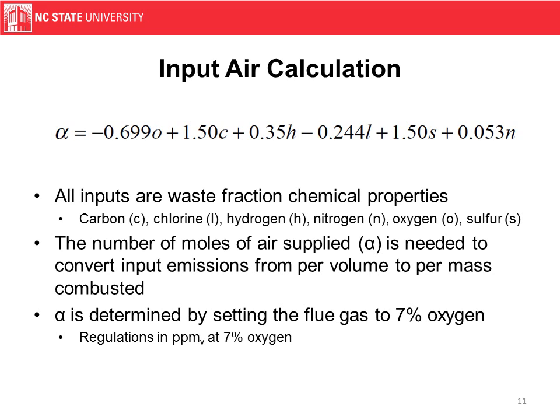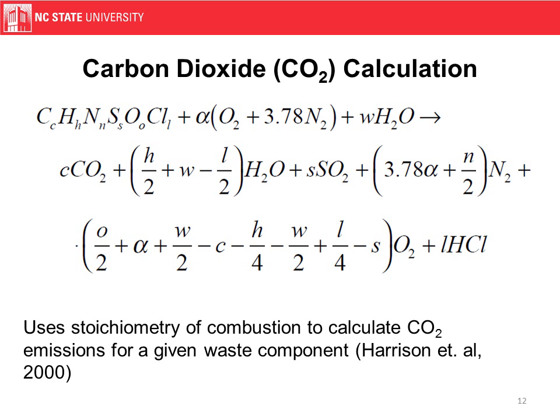Here's a carbon dioxide calculation. In the top left we see a complex-looking compound meant to represent the waste component or waste fraction. The waste in plus the air plus water — that's our input — equals our carbon dioxide, water, sulfur dioxide, diatomic nitrogen, diatomic oxygen, and hydrochloric acid. We're using stoichiometry to estimate carbon dioxide, and this is our primary mechanism to calculate it.